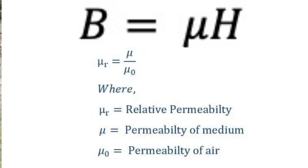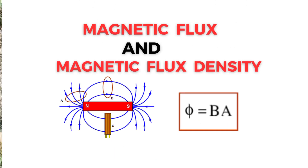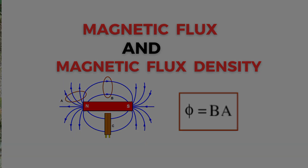Mu (μ) is the relative permeability. These are the main concepts of magnetic flux and magnetic flux density. That's all about it — see you in the next video, thanks for watching.